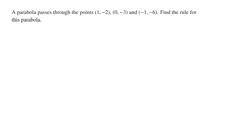Hey guys, in this video I'm going to go through an example of finding the equation of a parabola given three points. Reading the question: a parabola passes through the points (1, -2), (0, -3), and (-1, -6). Find the rule for this parabola.